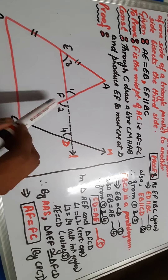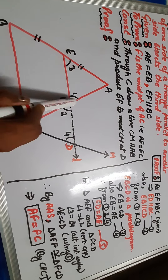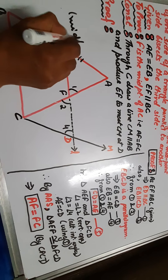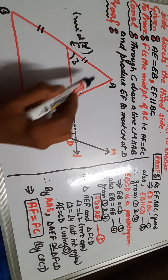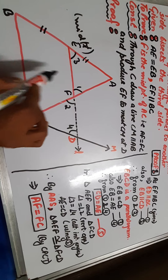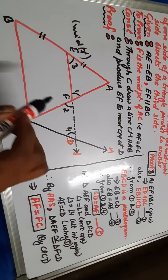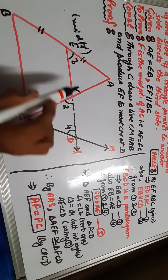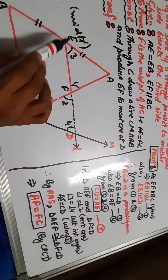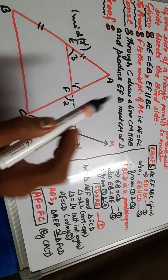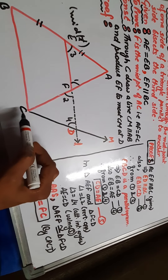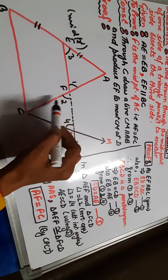What is the basic difference between the two theorems? Basically there are three things: E is a midpoint, F is a midpoint, and EF is parallel to BC. In the midpoint theorem, two midpoints are given and parallel lines are proved. In the converse of the midpoint theorem, one midpoint is given and parallel lines are given — we have to show that F bisects AC, meaning these two parts are equal and F is the midpoint.